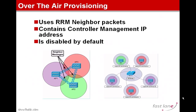It's disabled by default for security reasons. As you will see in a few seconds, the OTAP information provides the IP address of your controller in the clear, without any encryption. When the access point boots, it tries to discover controllers, so it's not connected to anything yet. It doesn't have any tunnel or secure encryption with anything yet. The only thing it can do is listen to the air, and if it gets information, this information has to be sent in the clear for the access point to be able to read it. So the OTAP information that is sent in the RRMNeighborPacket is sent in the clear.